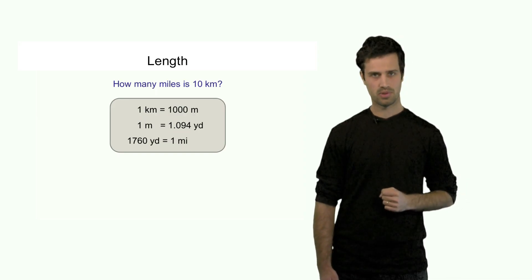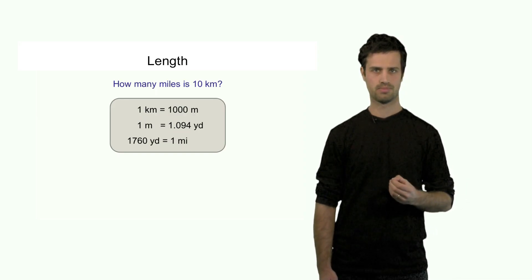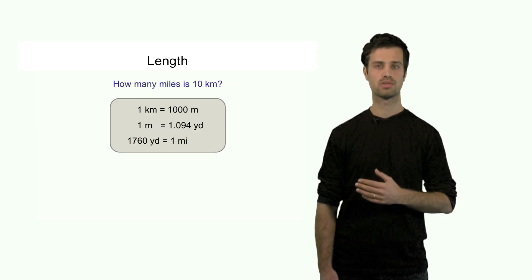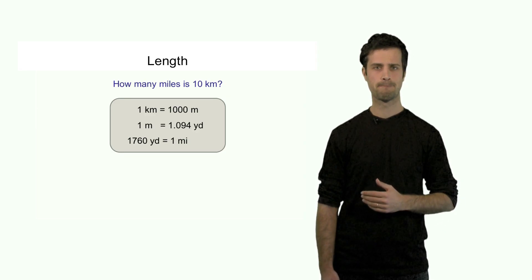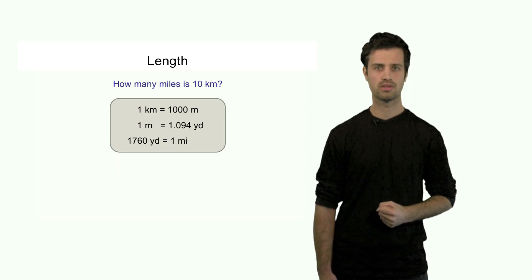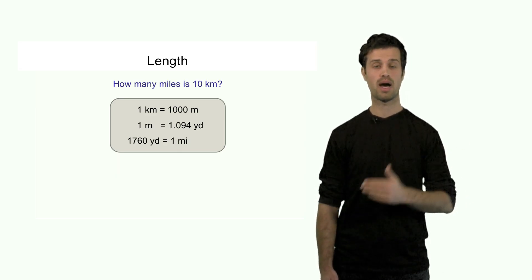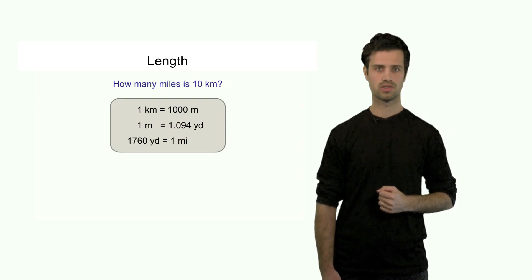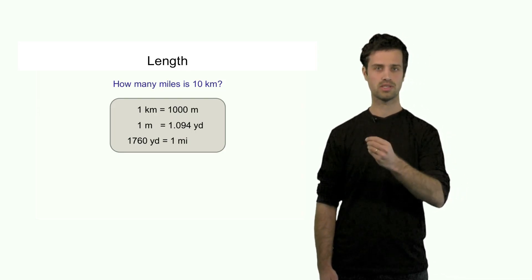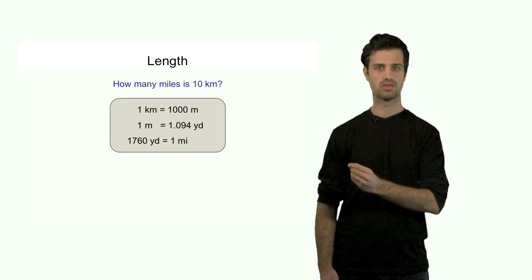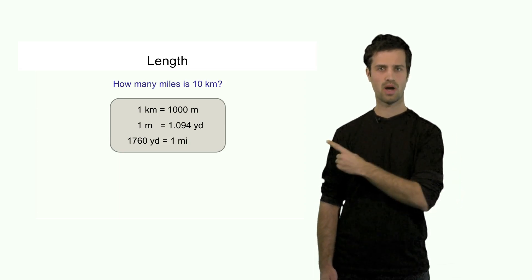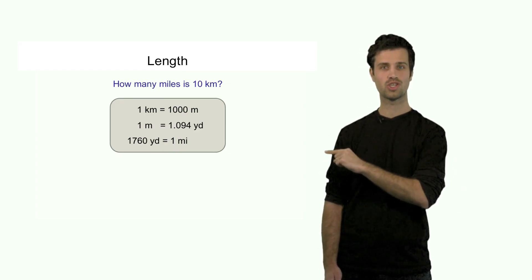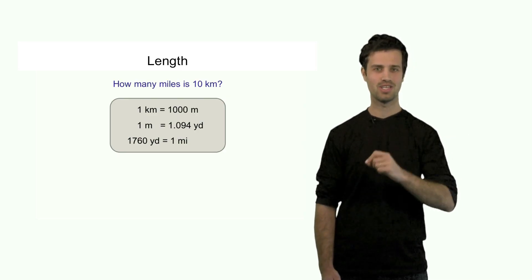Let's look at a couple of examples — let's look at length. Let's say I want to convert 10 kilometers into miles. In order to complete this calculation, I need to know the relation between kilometers and miles. In this box over here, there are three relations: they relate kilometers to meters, meters to yards, and yards to miles. There's no direct relation between kilometers and miles, but I can use these relations to sequentially convert kilometers into miles.